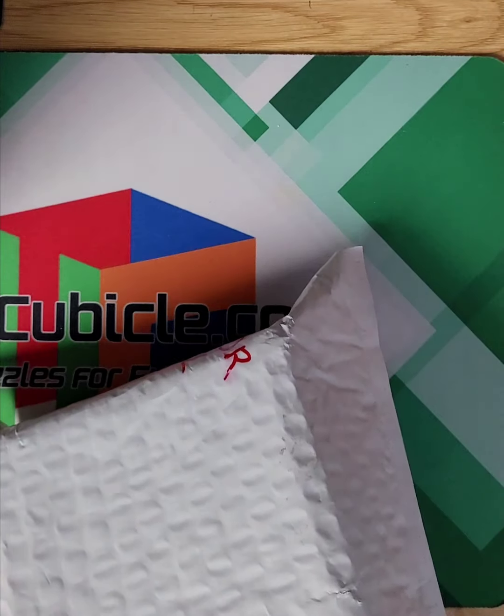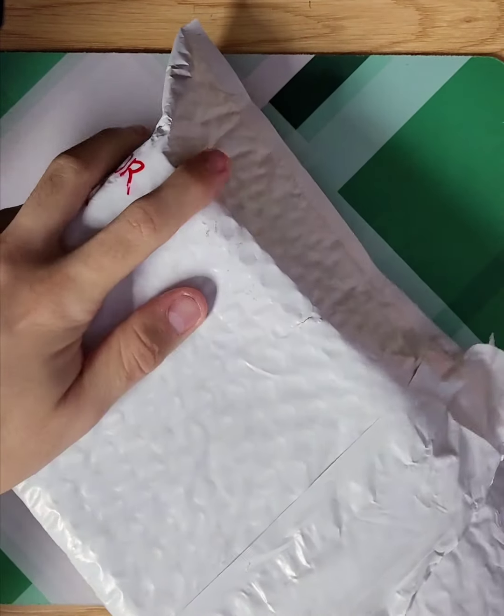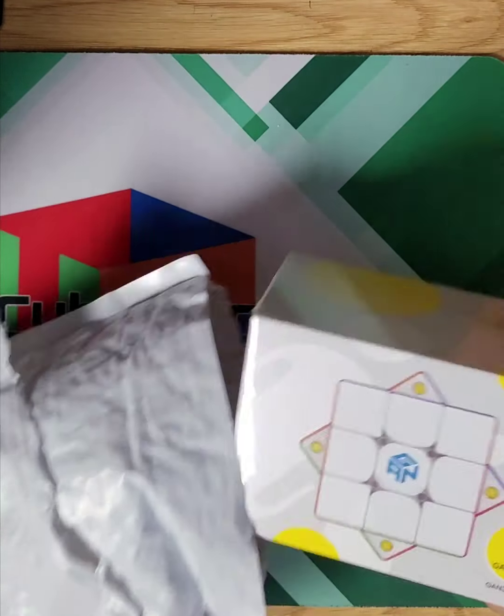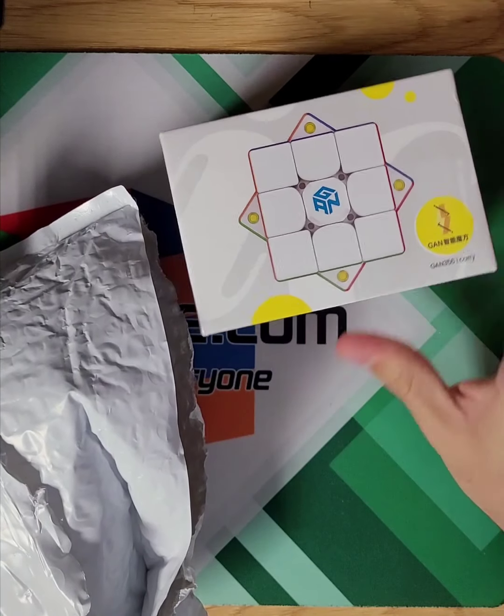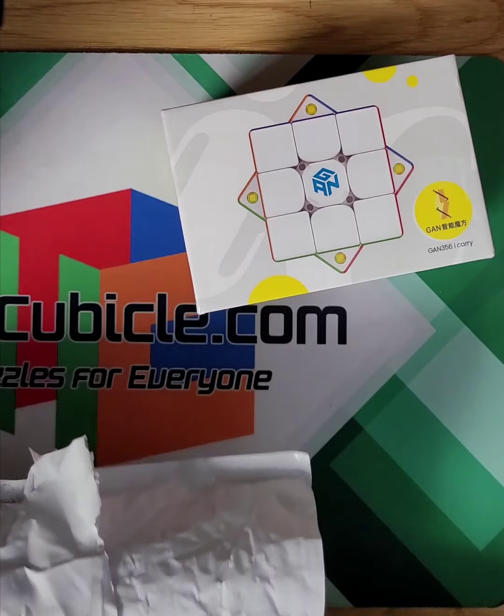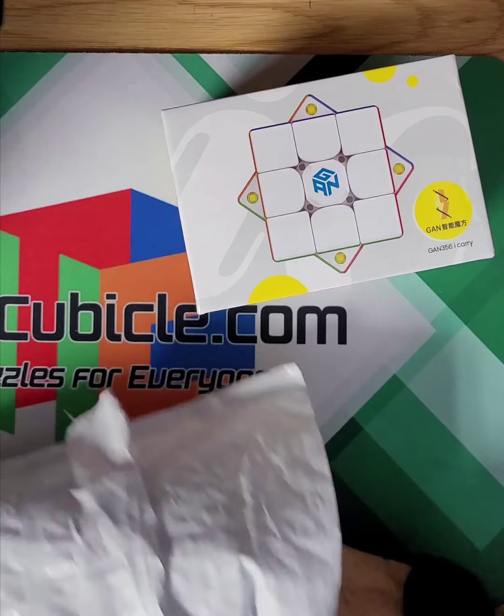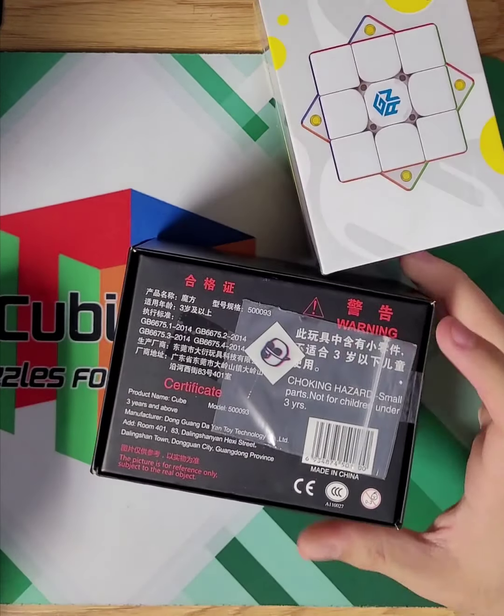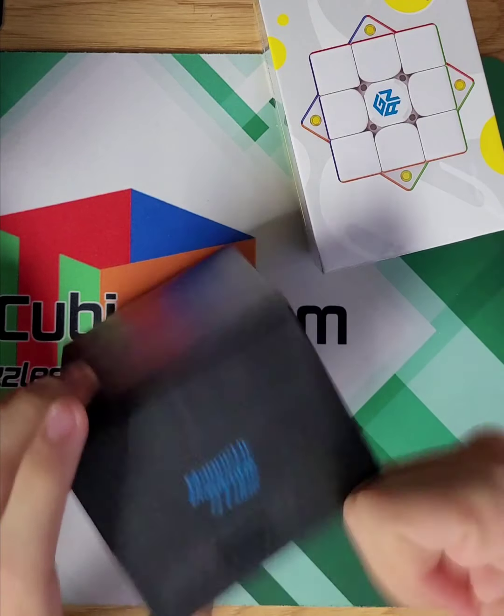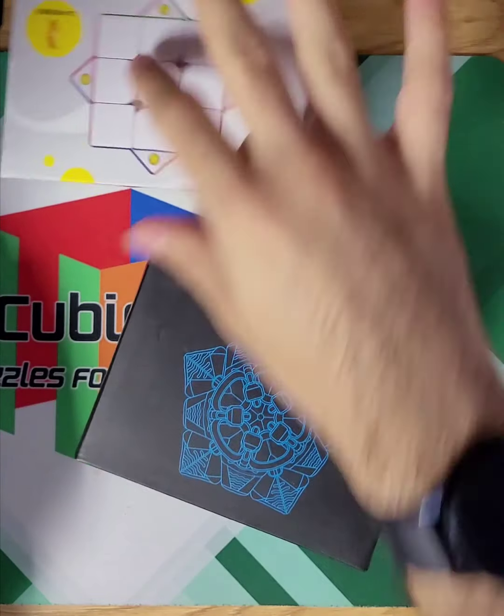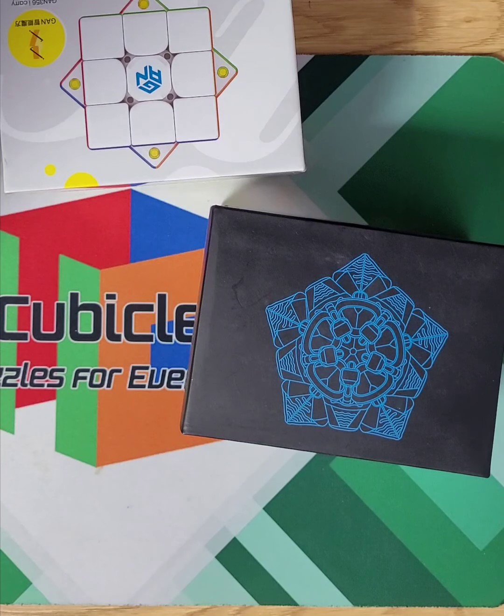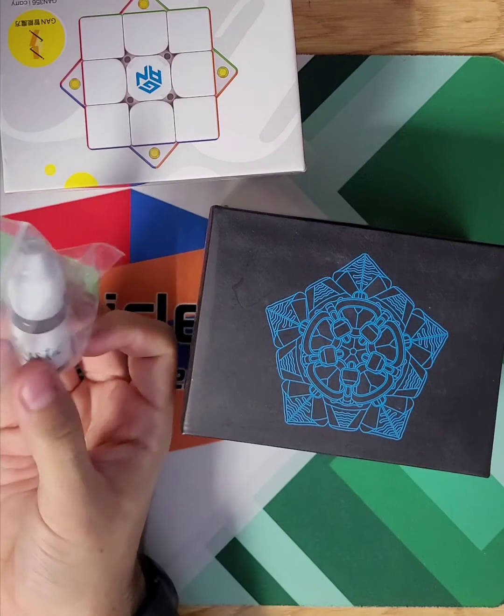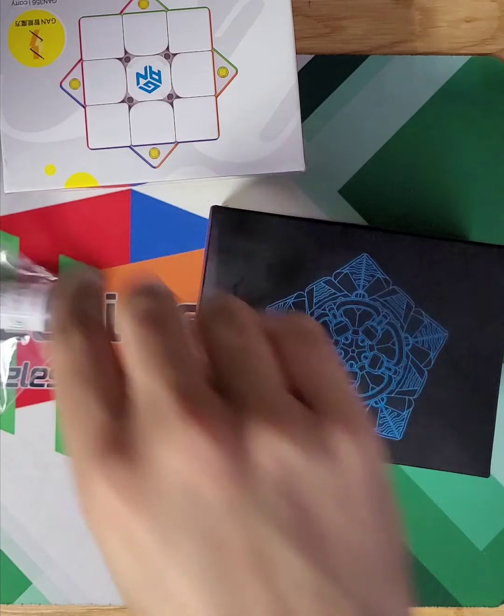Receipts over there. In this package we have a GAN iCarry as well as the Dayan Megaminx. Now the reason why I have these items or why I got these specific items was because, oh and also I have Mystic lube. I got it free because I bought these two things.